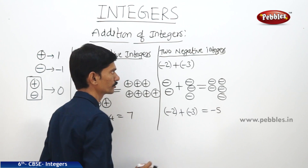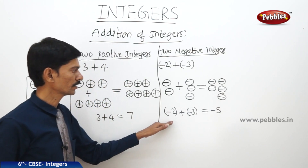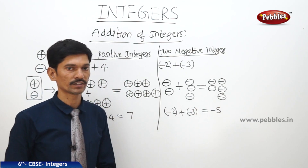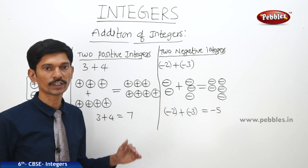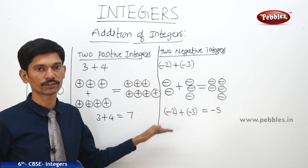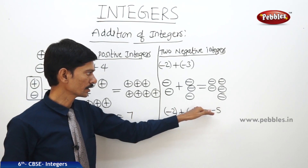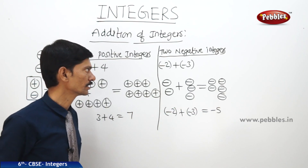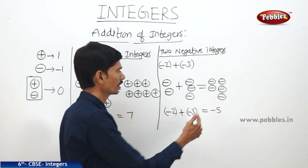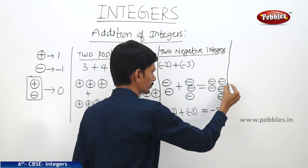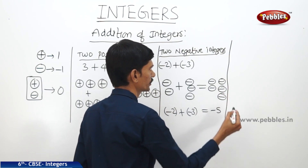So we get minus 2 plus minus 3 equals minus 5. The sum of two negative integers is again a negative integer. When we add two negative integers, we get again a negative integer. Now let us add a positive and a negative integer.